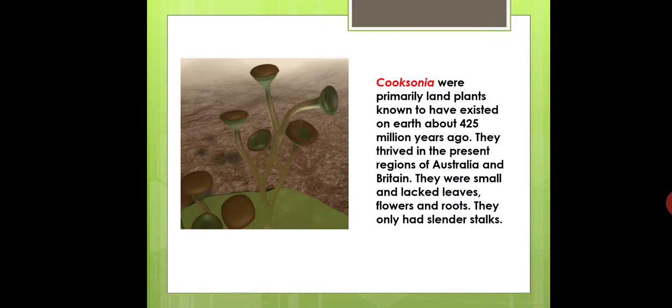There are also many plant examples of extinct species, such as extinct tracheophytes and gymnosperms. One example is Cooksonia — it is a primitive land plant that existed on Earth about 425 million years ago.